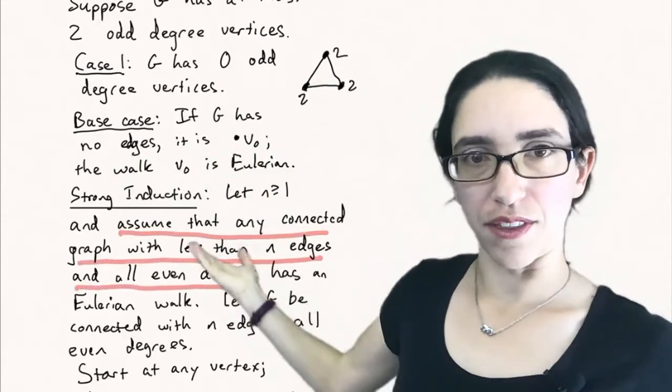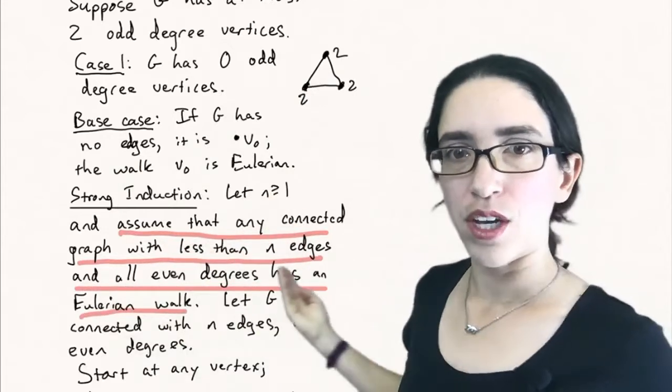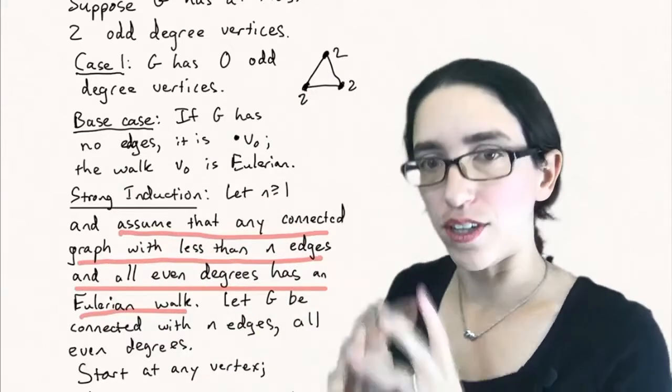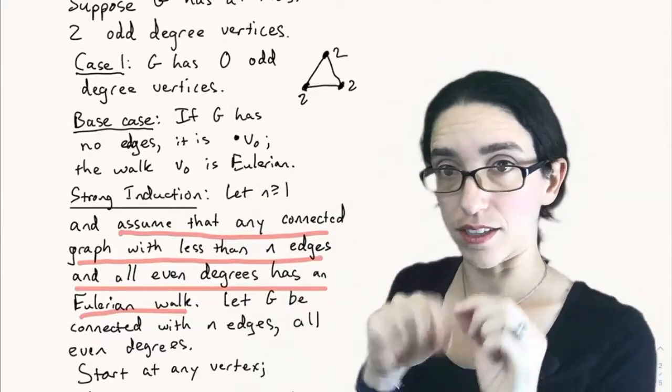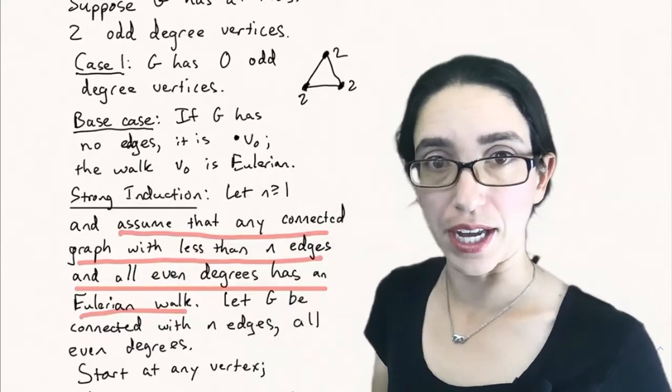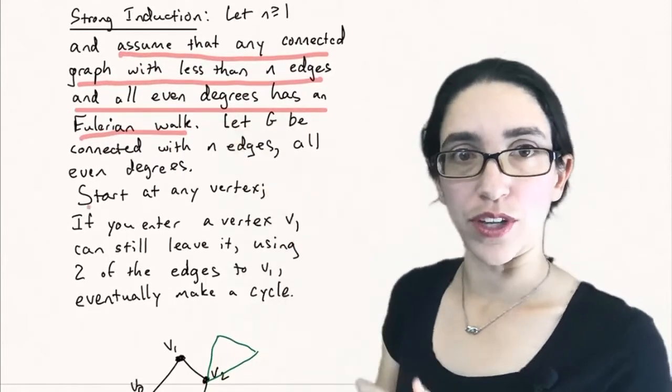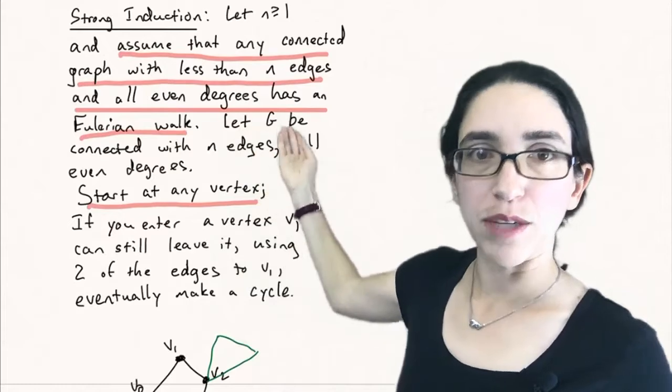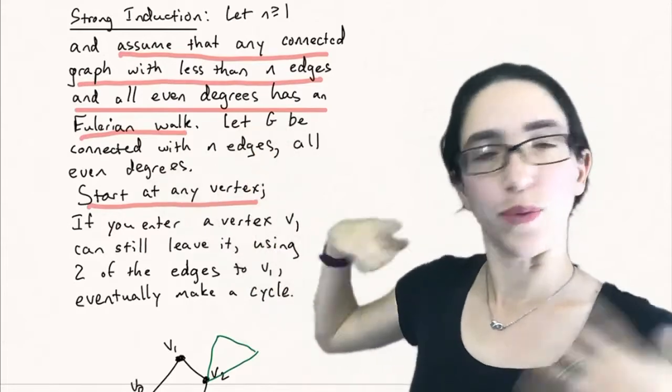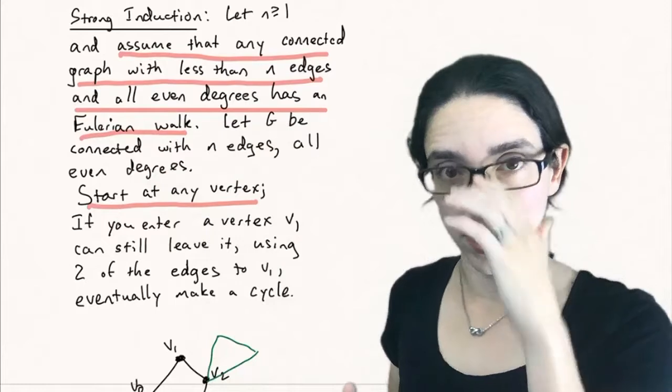Now for the strong induction hypothesis, we let n be at least one. And we assume that any connected graph with less than n edges and all even degrees has an Eulerian walk. In fact, we're going to show it's an Eulerian cycle. It comes back to the same vertex you started at. And let G be some connected graph with n edges with all even degrees.